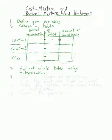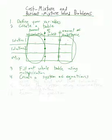Step four — this is the important part — you're going to create a system of equations. You're going to use the first column and the third column. We know that the solution amounts in each row add up to the amount in the mix, and the amount of substance in each row has to add up to give us the amount of substance in the mix.